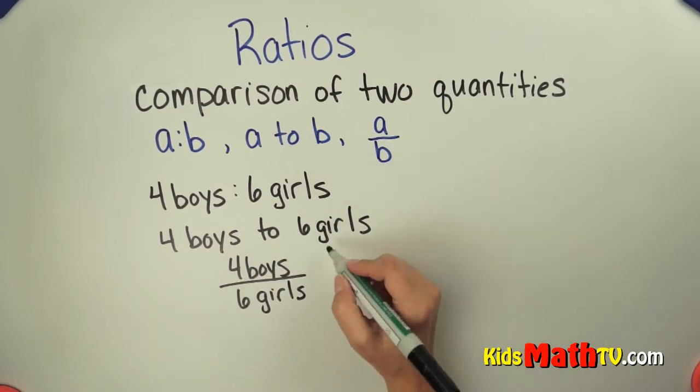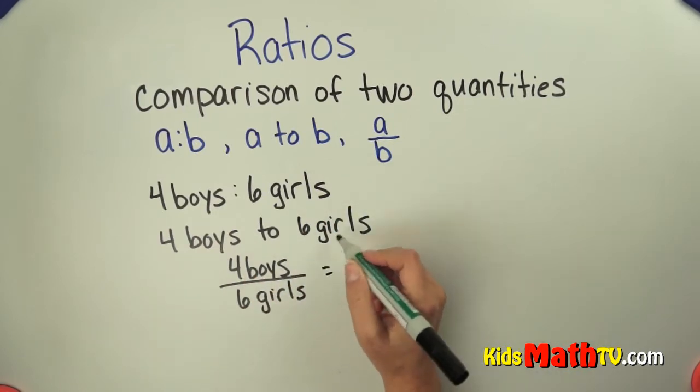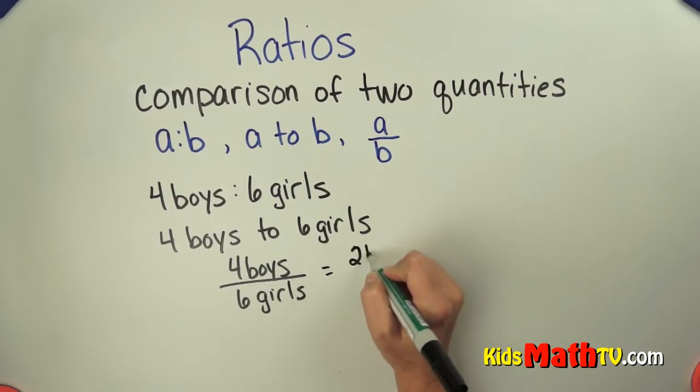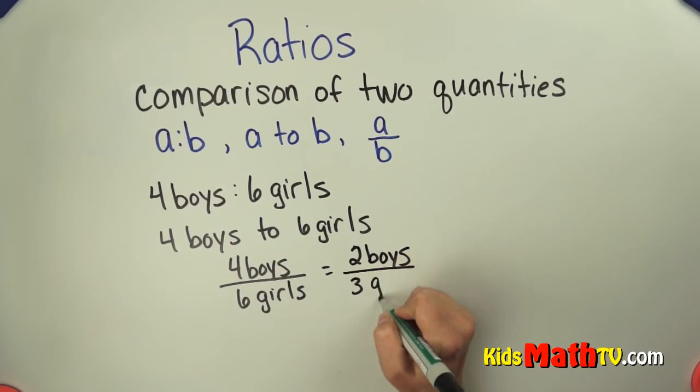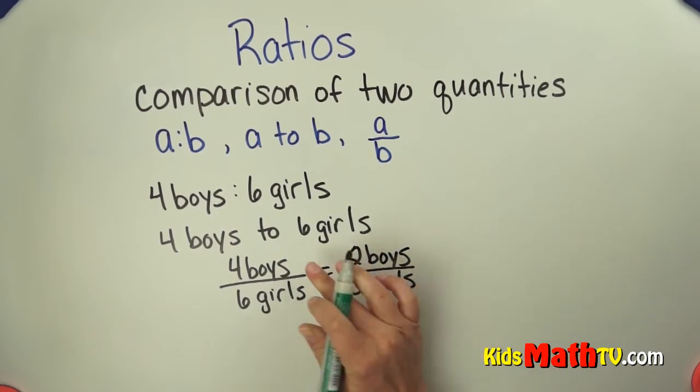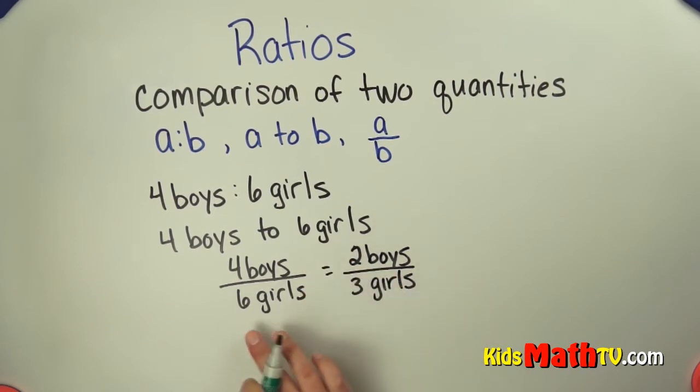You can simplify the ratio. This is also equivalent to two boys to every three girls. We just simply divide it by two on the numerator and the denominator.